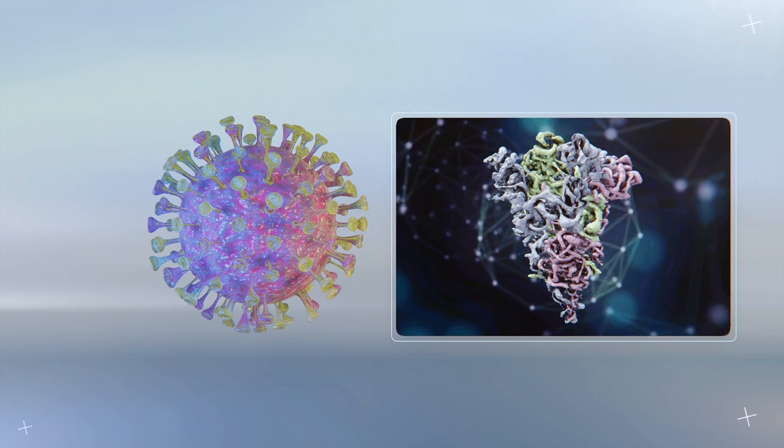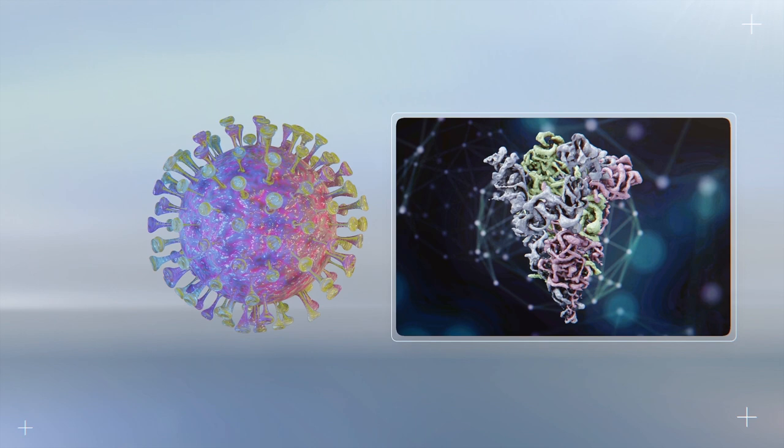The spike protein possesses receptor-binding domains, or RBDs, that the coronavirus uses to pry open receptors before penetrating the cellular membrane.